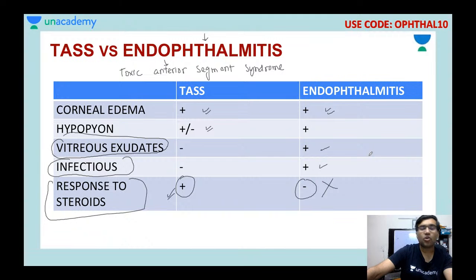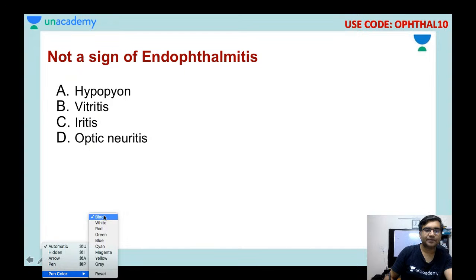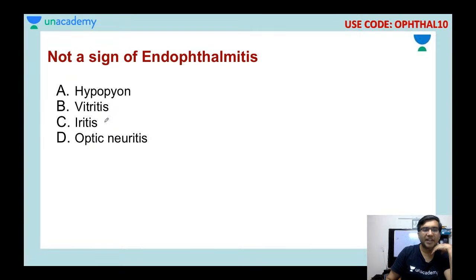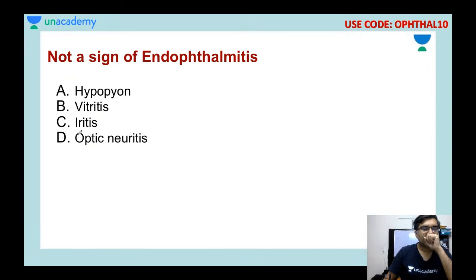Before ending the session, here are important MCQs. First question: what is not a sign of endophthalmitis? Options are hypopion, vitreous inflammation (vitritis), iritis, or optic neuritis. The answer is optic neuritis — it is not a sign of endophthalmitis.